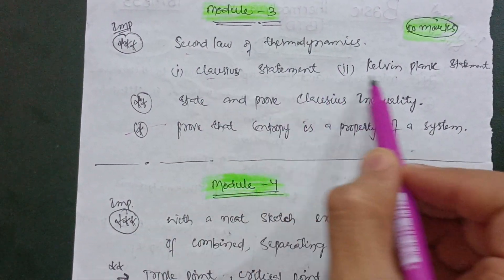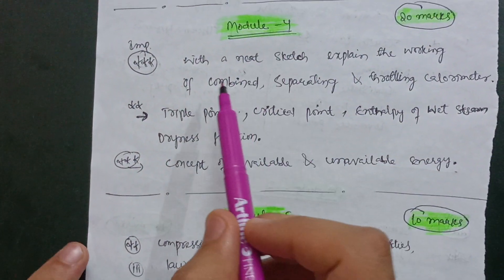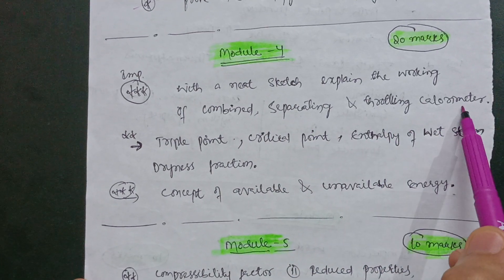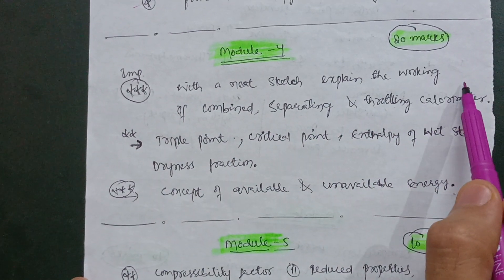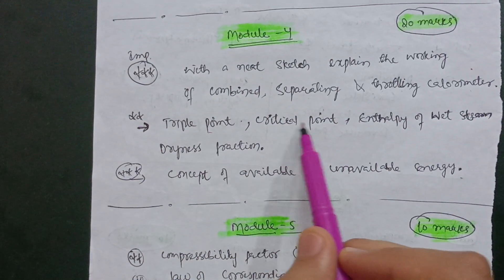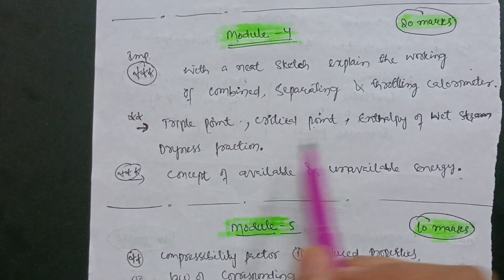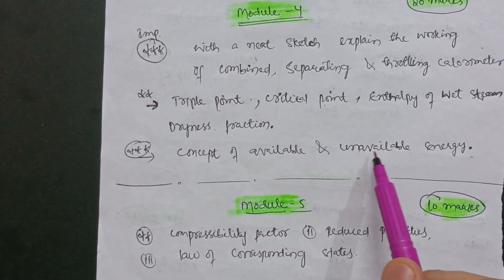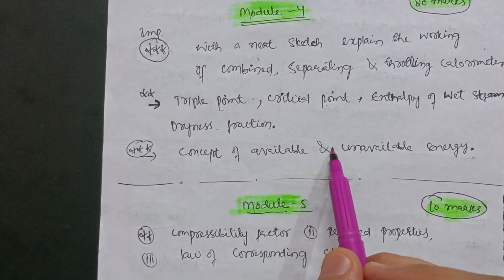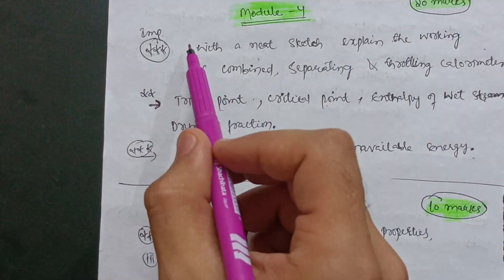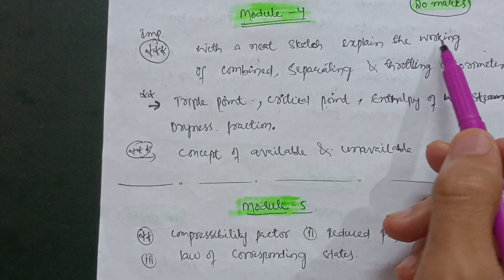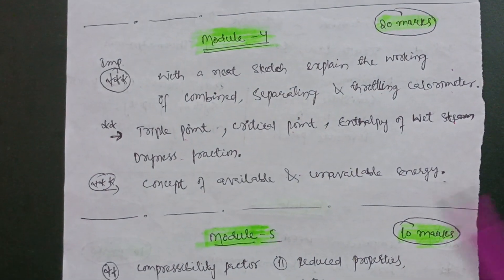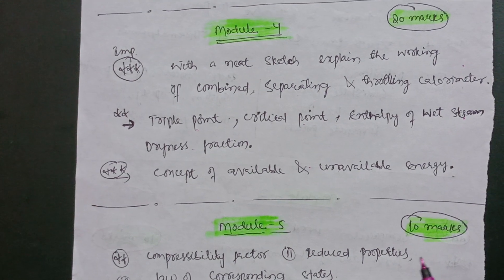Focus on the second law of thermodynamics, Clausius statement, and Kelvin-Planck statement. In module four, with a neat sketch explain the working of the combined separating and throttling calorimeter — this carries 10 marks. Also cover triple point, critical point, enthalpy of wet steam, dryness fraction, and the concept of available and unavailable energy. The calorimeter question is always asked in the VTU examination.